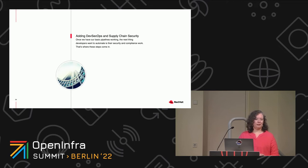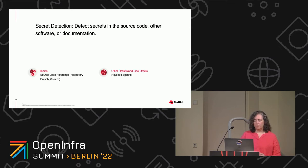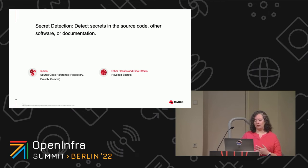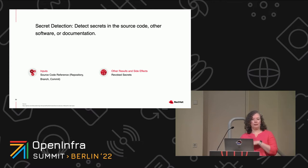This is where it starts to get more sophisticated — adding DevSecOps and supply chain security. Once we have the basics working, we want to automate our security and compliance work. Secret detection is where we detect secrets in the source code or other software or even accidentally in our documentation. An interesting side effect is that these can actually revoke the secrets — for example, GitHub has a tool that will detect secrets and invalidate the keys if it sees that you've checked them into your source code.